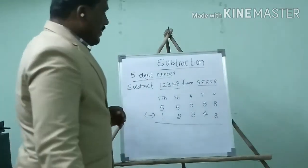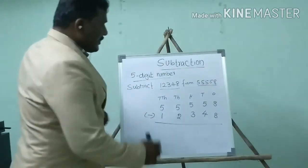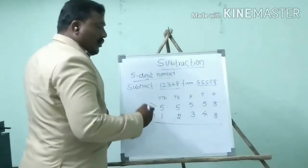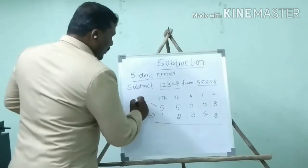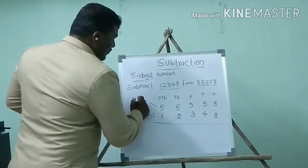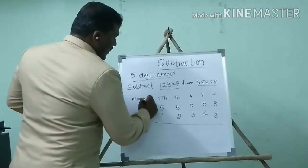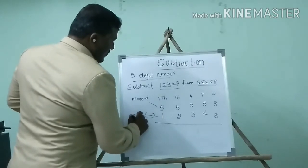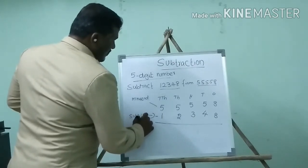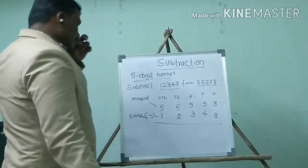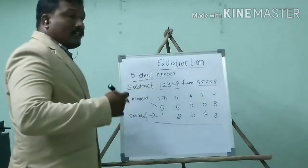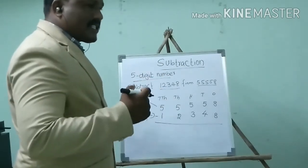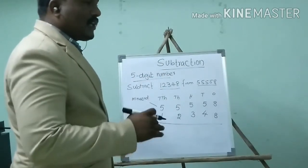Now we want to find out the difference. It is a minuend — whenever you do this calculation, you have to mark it as minuend. It is a subtrahend. Repeatedly writing these helps you remember: minuend, subtrahend, difference.